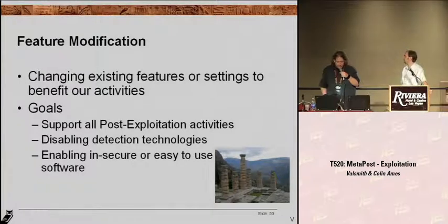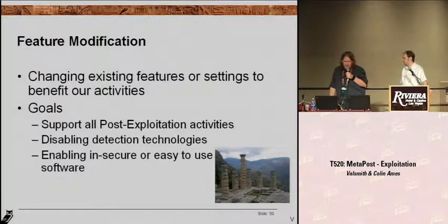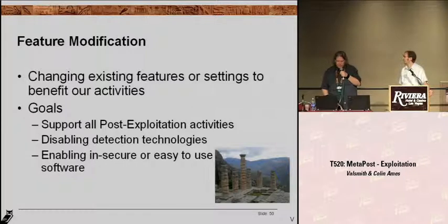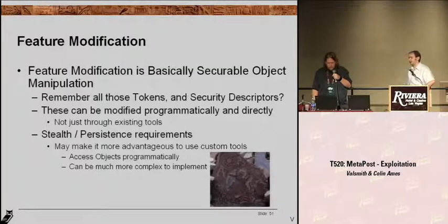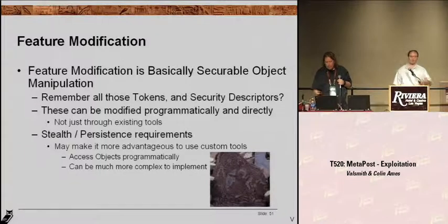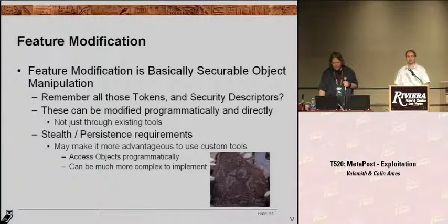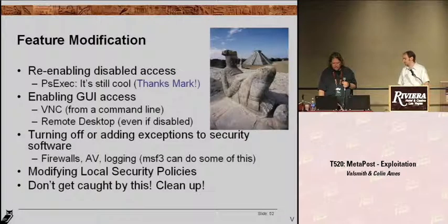Next subject matter: feature modification. This is the idea of changing existing features on a system to benefit our post-exploitation activities. Maybe you want to enable and secure things, or re-enable things they've turned off. This is what controls all of these things — this is how you disable things on Windows, and this is how we want to leverage this to re-enable them. It plays many roles. We're going to show a fun demo here in a second about re-enabling GUI access remotely from a command line and why you would even care about doing this. But you've got to be careful because sometimes turning stuff that they've intentionally turned off is a bad idea because it gets you caught.